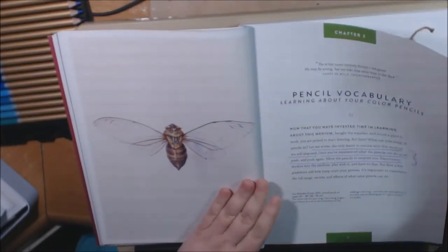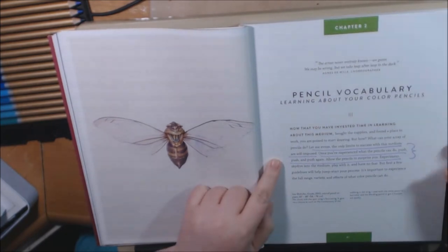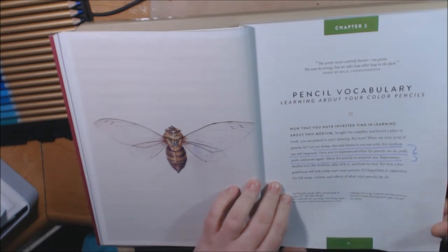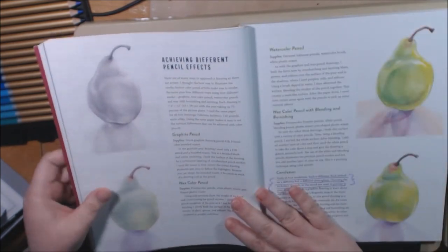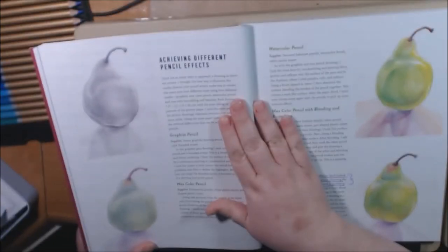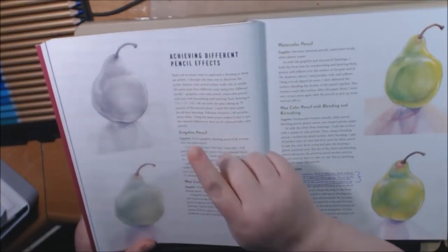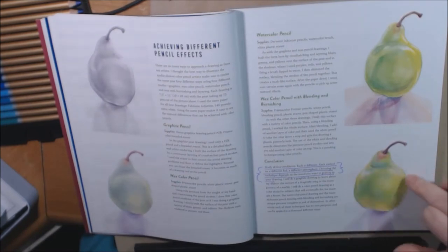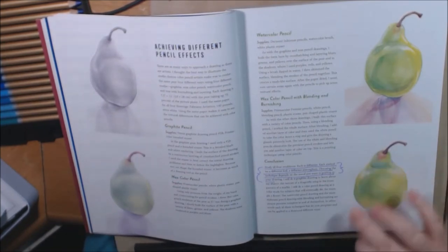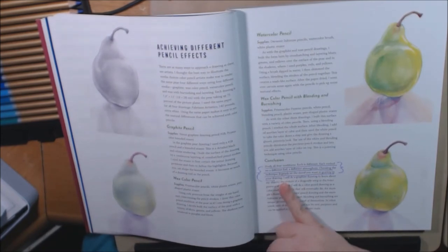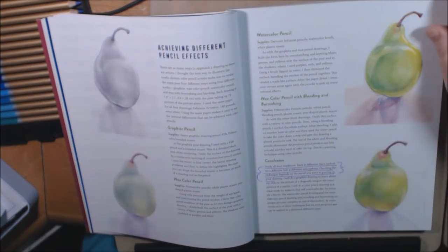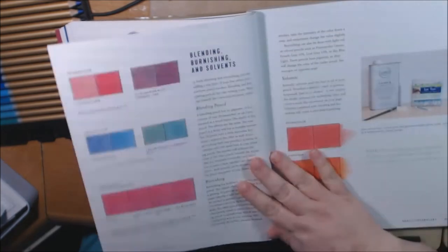And then we got chapter two, pencil vocabulary. Learning about your colored pencils. The only limit to success with this medium are self-imposed. Once you've experienced what the pencils can do, push, push, push again. Allow the pencils to surprise you and experiment. She gives great tips in this book. And then we have the achieving different pencil techniques. This one is graphite pencils, wax pencils, watercolor pencils, and then right here, this is where it's been burnished with the colorless blender. And it says, study all four renditions. Each is different. Each embodies a different feel, a different atmosphere. Choosing the technique depends on the mood you want to portray in your drawing. Or coloring.